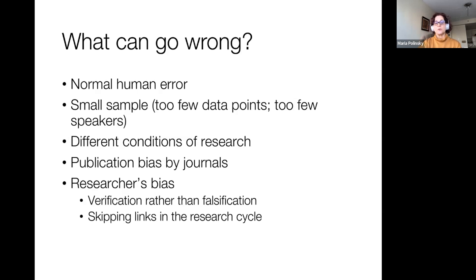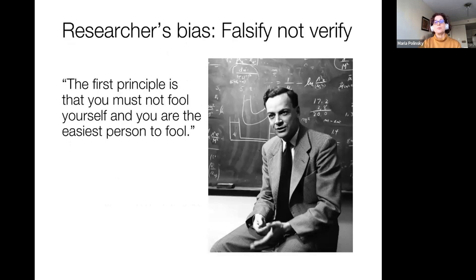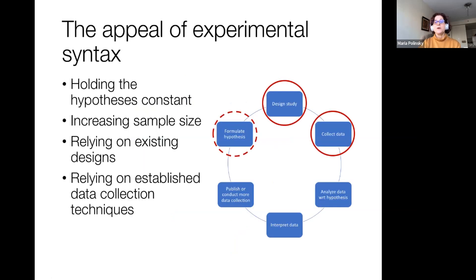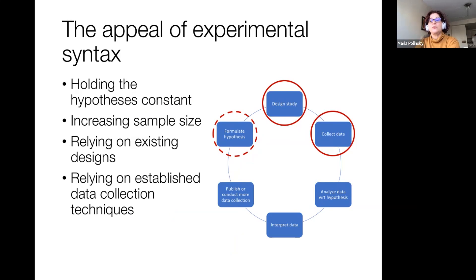That forces us to skip some links in the research cycle. This takes me to the famous quote by Richard Feynman: 'The first principle is that you must not fool yourself and you are the easiest person to fool.' When you have this circle of collecting data, analyzing it, interpreting it, publishing, forming hypotheses, and designing studies, we often skip certain steps. The appeal of experimental syntax is that it allows us to hold the hypothesis constant and then increase our sample size, rely on existing designs, or rely on established collection techniques.